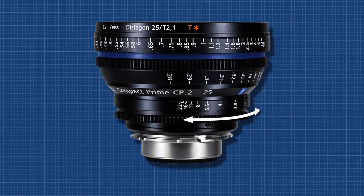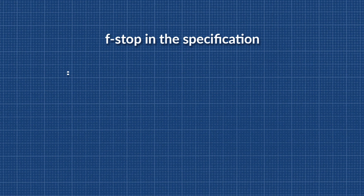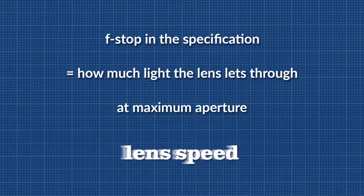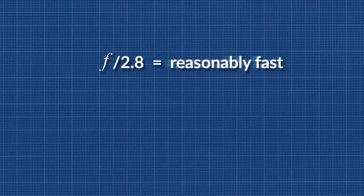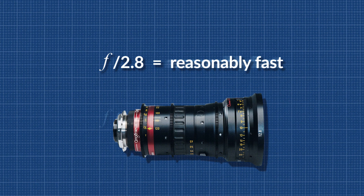When you read the F-stop in the specification of a lens, it means how much light the lens lets through at maximum aperture. This is also called the lens speed. A fast lens means the same exposure can be achieved at a faster shutter speed. So if you read, for example, F2.8, it is a reasonably fast lens. If you read F1.4, you have a very fast lens.